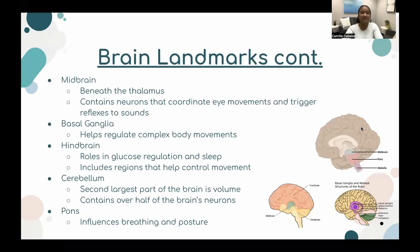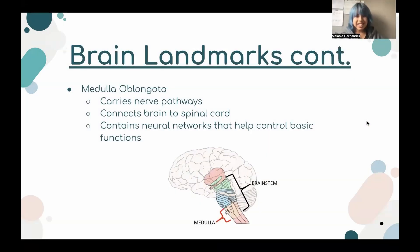The midbrain, which is beneath the thalamus, contains neurons that coordinate eye movements and trigger reflexes to sounds. The basal ganglia helps regulate complex body movements. The hindbrain has roles in glucose regulation and sleep, and also includes regions that help control movement. The cerebellum is the second largest part of the brain and contains over half of the brain's neurons. The pons help influence breathing and posture. The medulla oblongata is the bottommost part of the brain, connecting the brainstem and spinal cord, and contains neural networks that support basic functions such as breathing and heart rate.